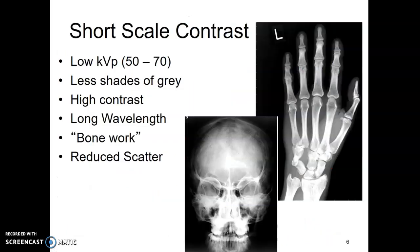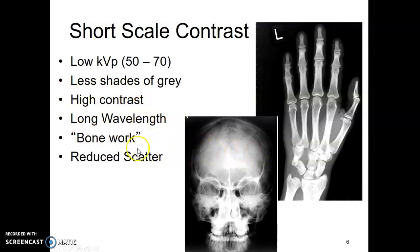Short-scale contrast uses low KVP, say in the 50 to 70 KVP range. There's less shades of gray — it's mainly black and white. It's also considered high contrast, long wavelength, moving slower to the target — not the fastball. Most often it's used for bone work, and it reduces scatter.